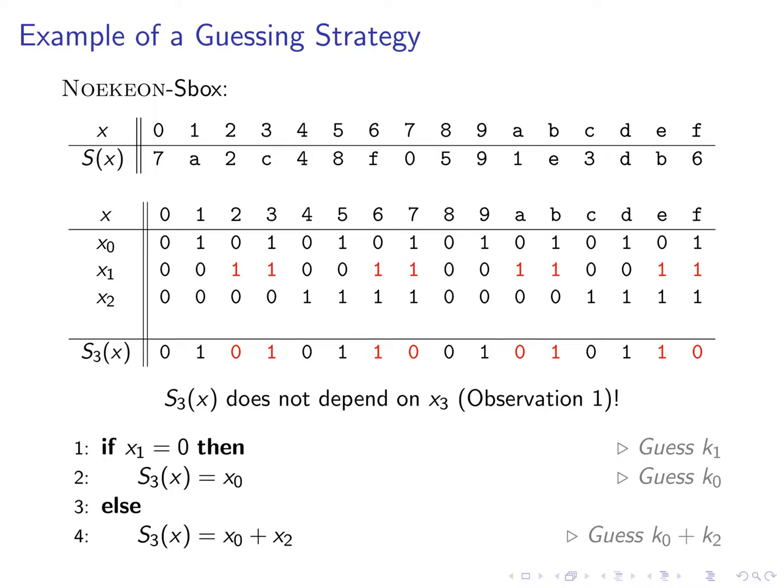Going back to the guess of x1. If it is 1 you can see that the truth table of s3 of x restricted to this case is exactly the xor of x0 and x2. Therefore we can simply guess x0 plus x2 or equivalently k0 plus k2 to determine the target bit.